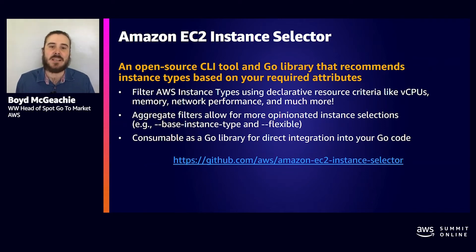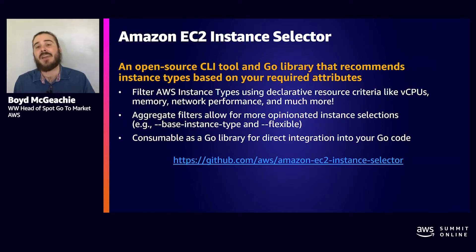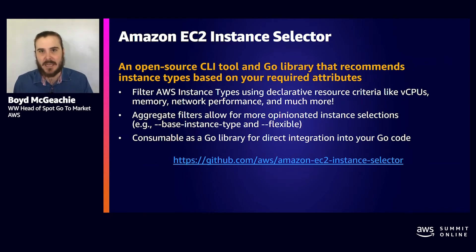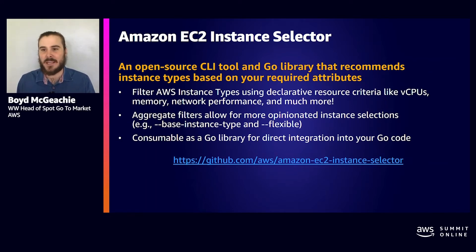The tool returns a full list of instance types that work for you, narrowing it down from 400 to a more manageable flexible list. It's open source, so you can download it, play with it, add your own characteristics, or build it into an internal service. It's also available as a Go library, so you can automatically integrate it into your Go code when making decisions. There are a lot of samples and examples on GitHub that walk you through how to think about those characteristics, put them into the instance selector, and automatically generate the list that's going to work for you.